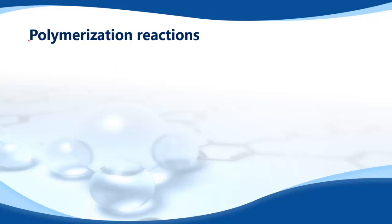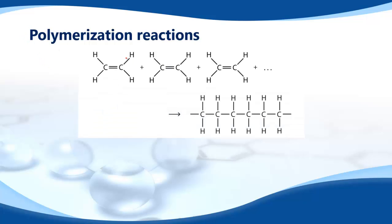Next are polymerization reactions. So what happens here, you have lots and lots of ethene molecules, and they all join together to give you a polymer, which in this case is polyethene. So these ethene molecules, they're called monomers. Mono means one.